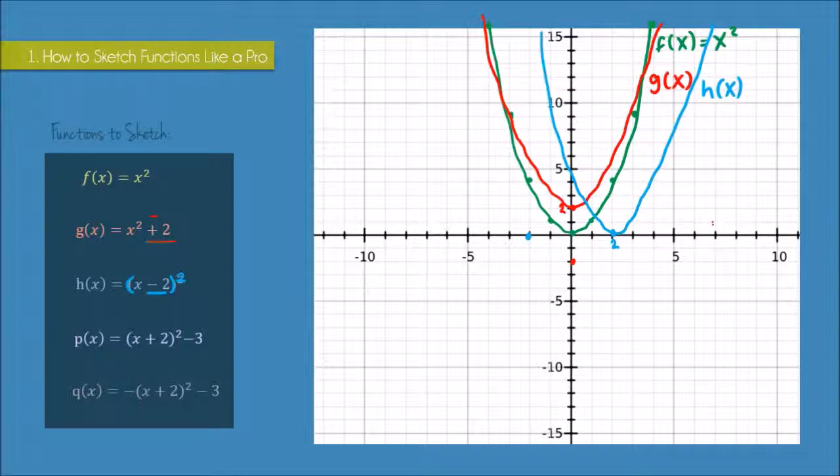Okay, moving on. See p(x) here—I've combined the two transformations. I have a minus 3 at the end, which means I want to move my function down to minus 3, but also I have an (x + 2)². So the coordinate of the turning point is also going to be 2 units to the left of the origin.